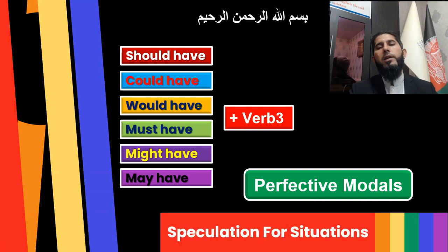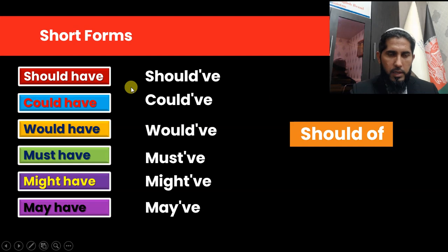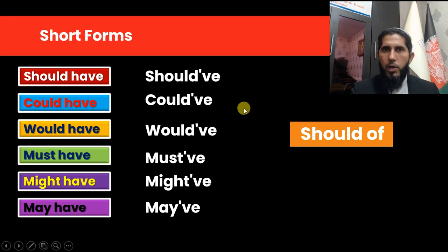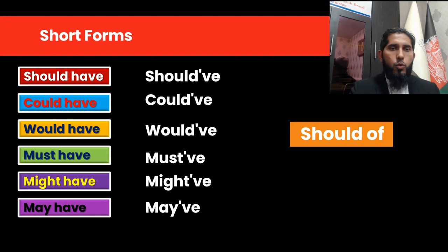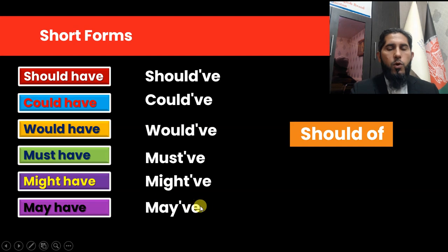First of all, I want to explain the short forms of these words, which are commonly used in daily English. Instead of 'should have' — shoulda. 'Could have' — coulda. 'Would have' — woulda. 'Must have' — musta. 'Might have' — might've. 'May have' — maya.